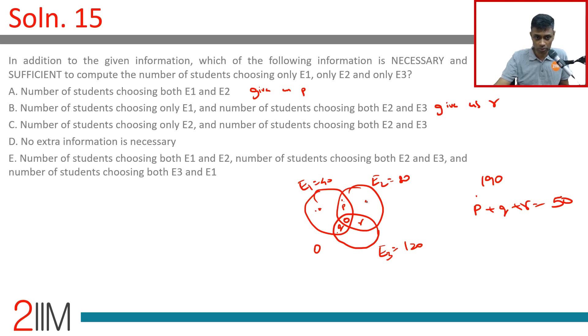Number of students choosing E2 and E3, that is r. We'll know q and r, therefore we can find p. So everything is done here, so C will be good. No extra information is necessary, that's not correct because p plus q plus r is 50. We do not know how much exactly p, q, r are, so we're still in trouble.